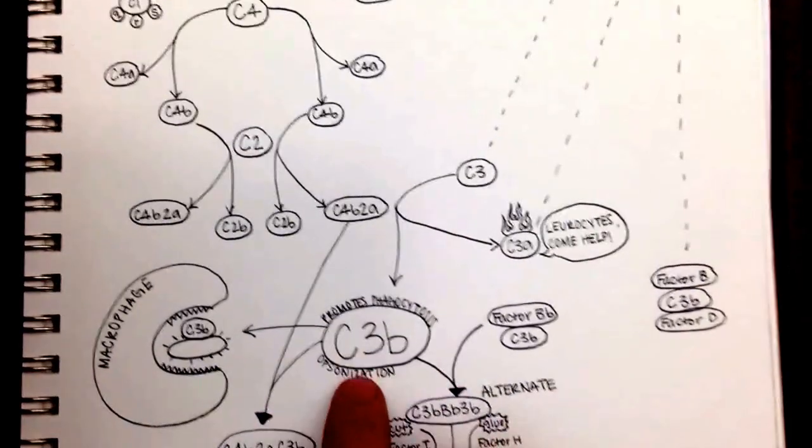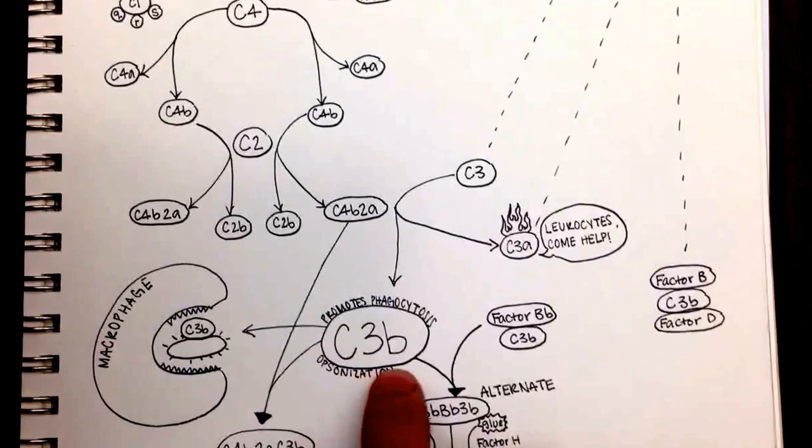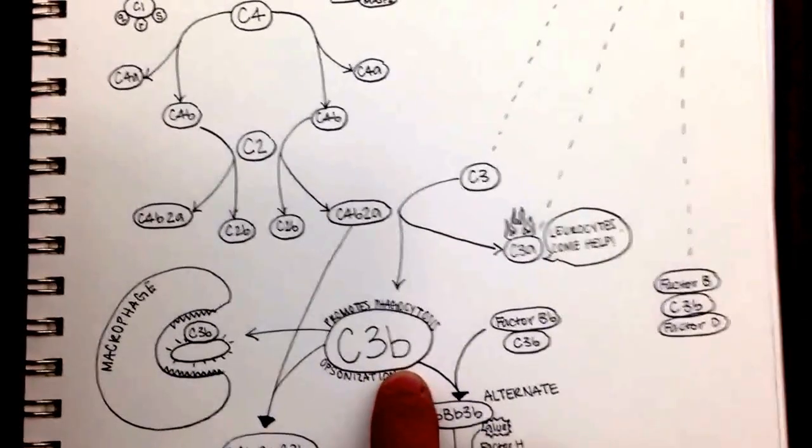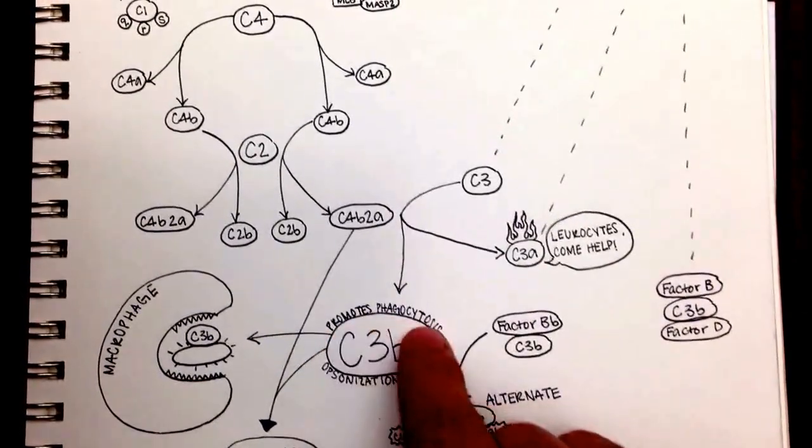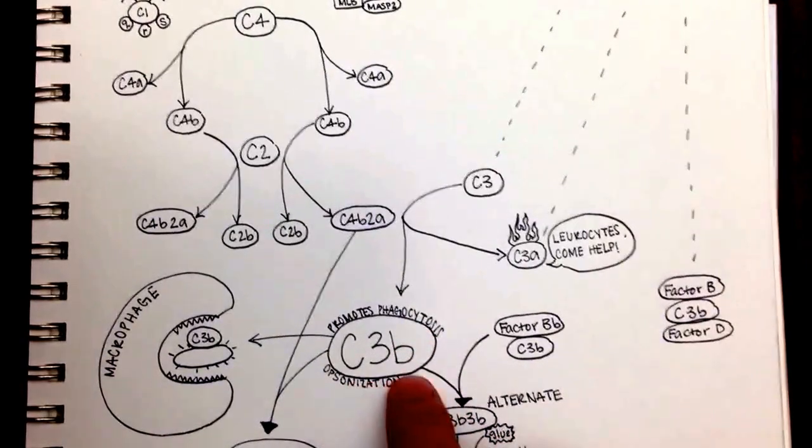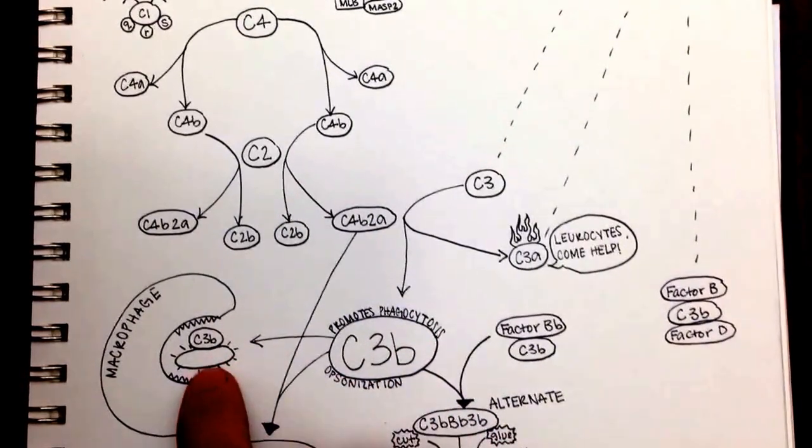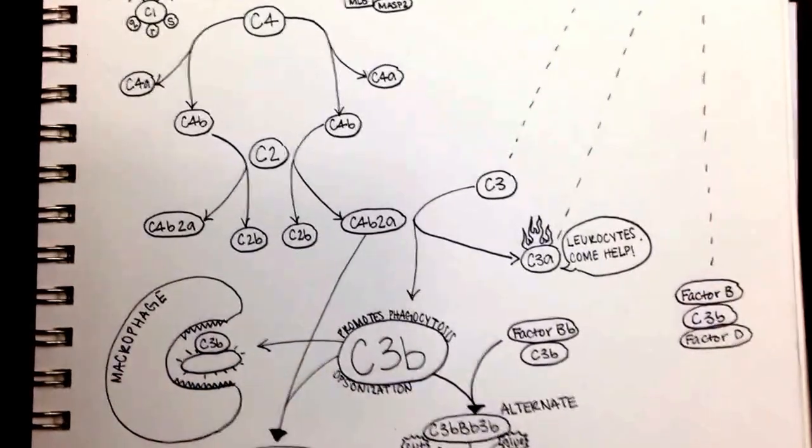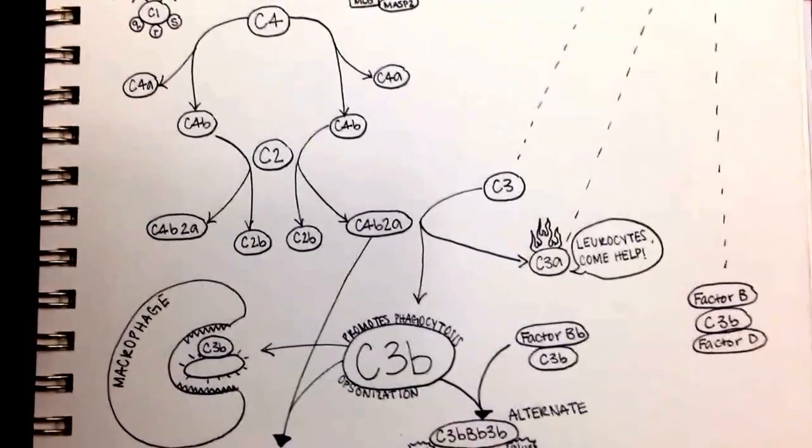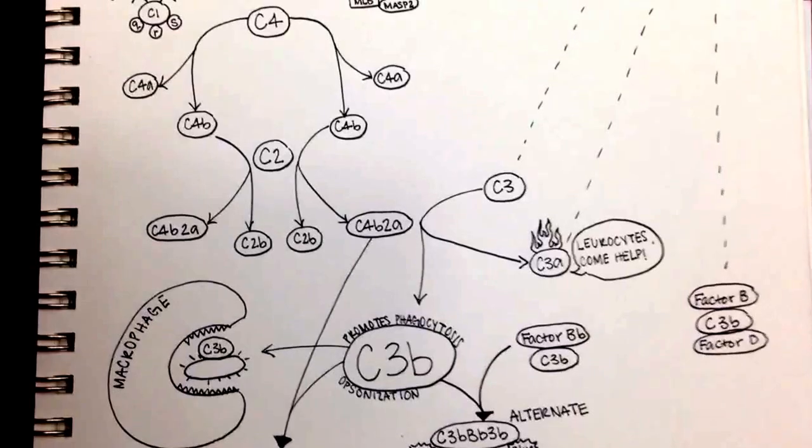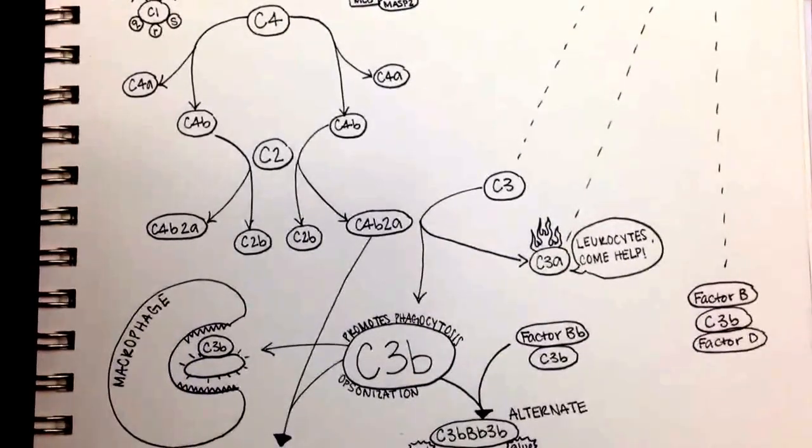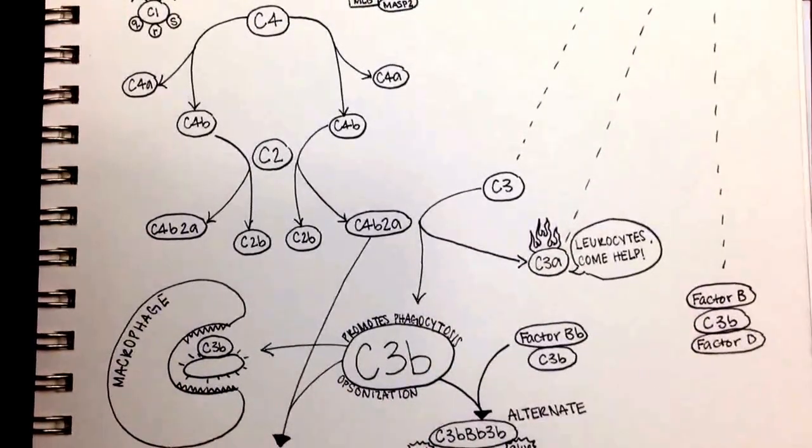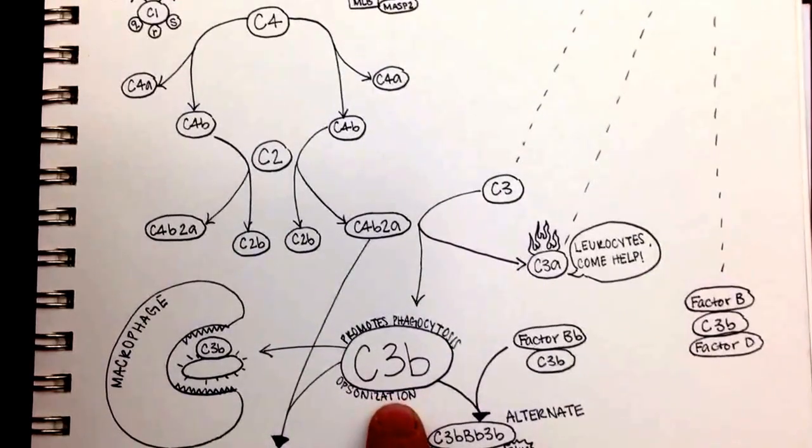Now, before we go down, we just want to remind you that the C3b itself is an opsonizer, which means it promotes phagocytosis. So if C3b is bound to a cell, like you can see here, a bacteria has a C3b bound to it, a macrophage is likely to come and eat it. And if that happens, then the whole complement cascade is over. And so if you're lucky, that will happen. But if you're not and your macrophages are all busy, the complement cascade can keep going.